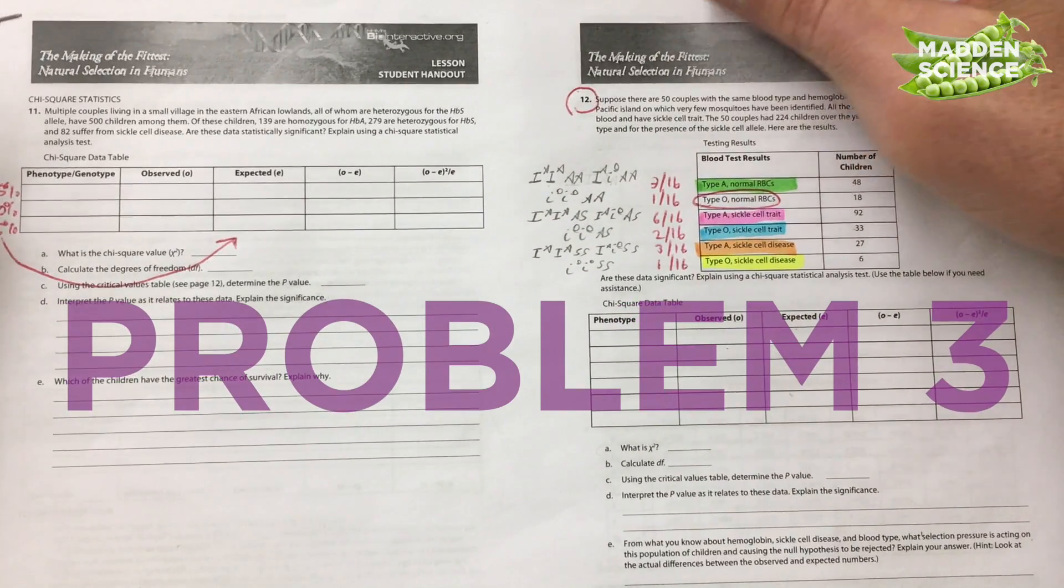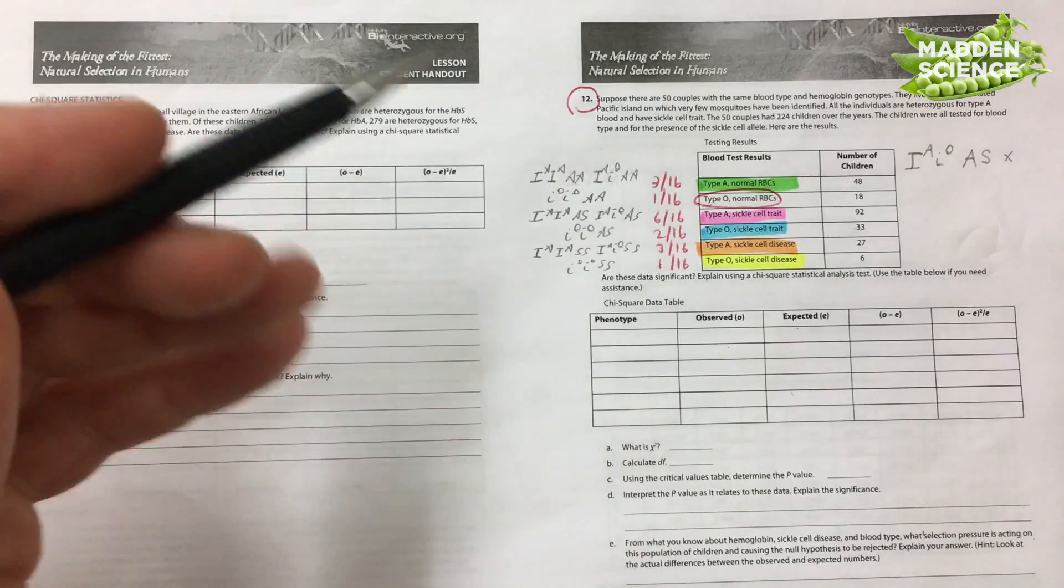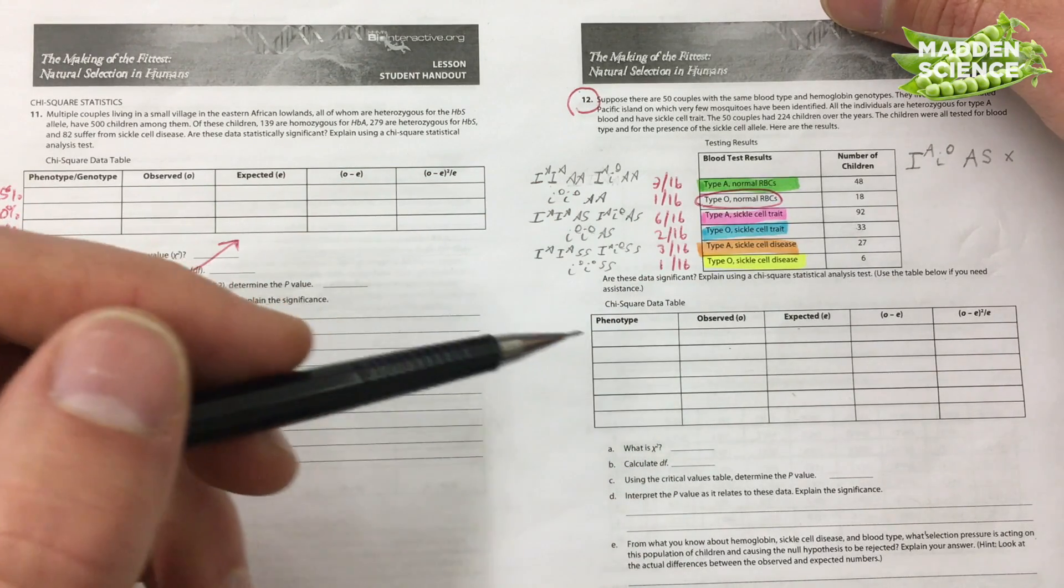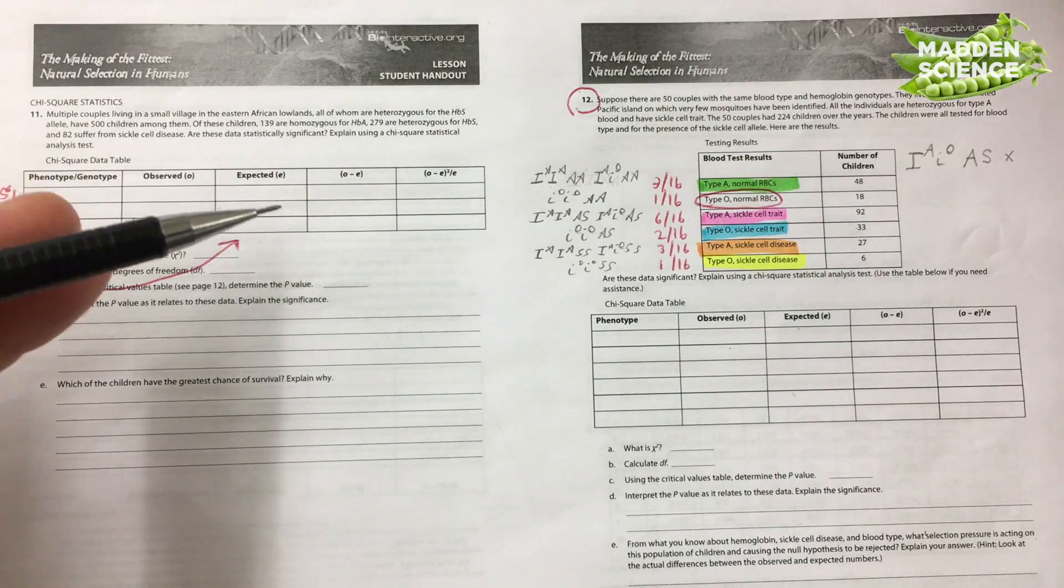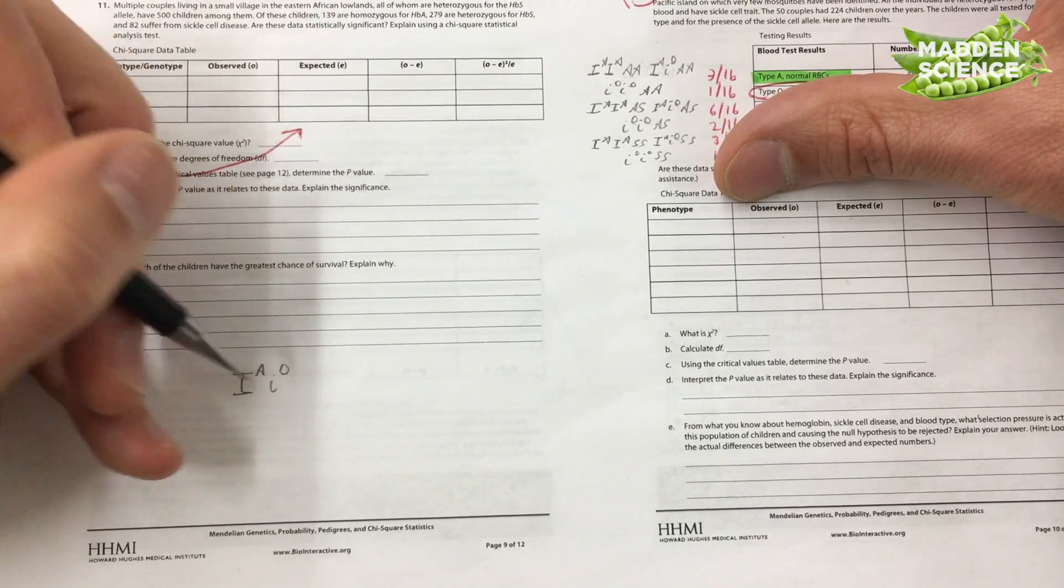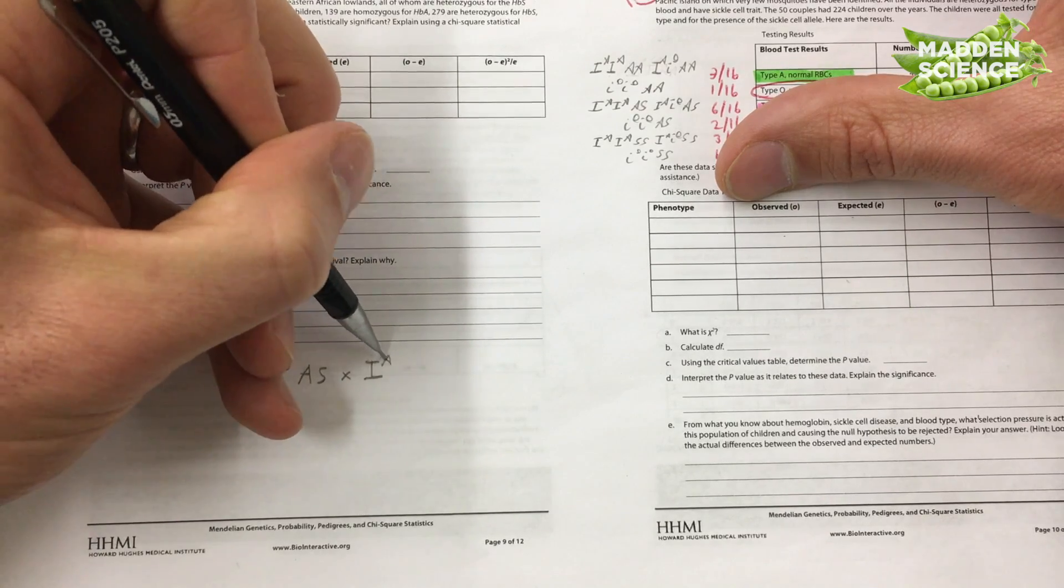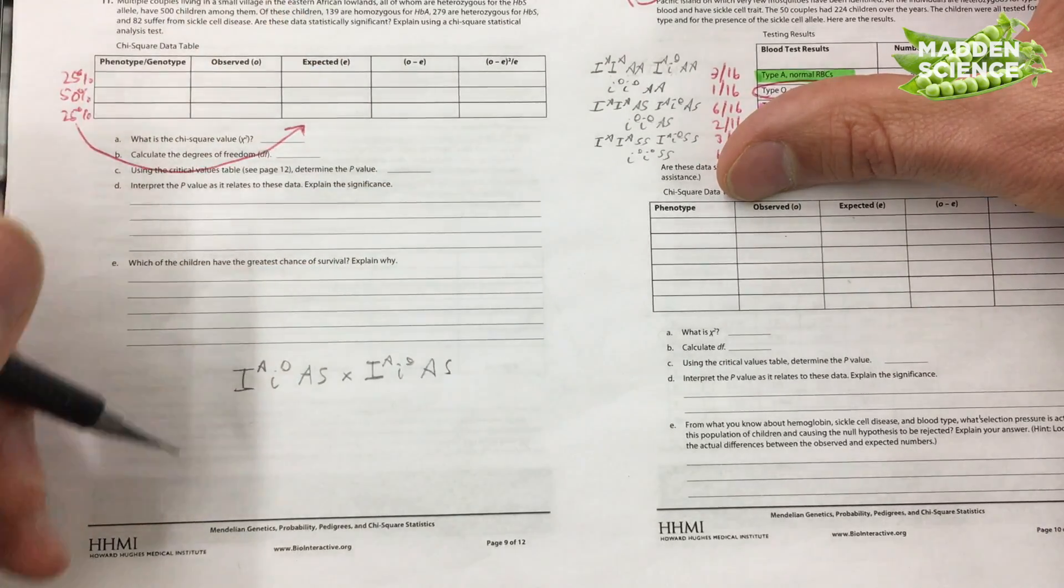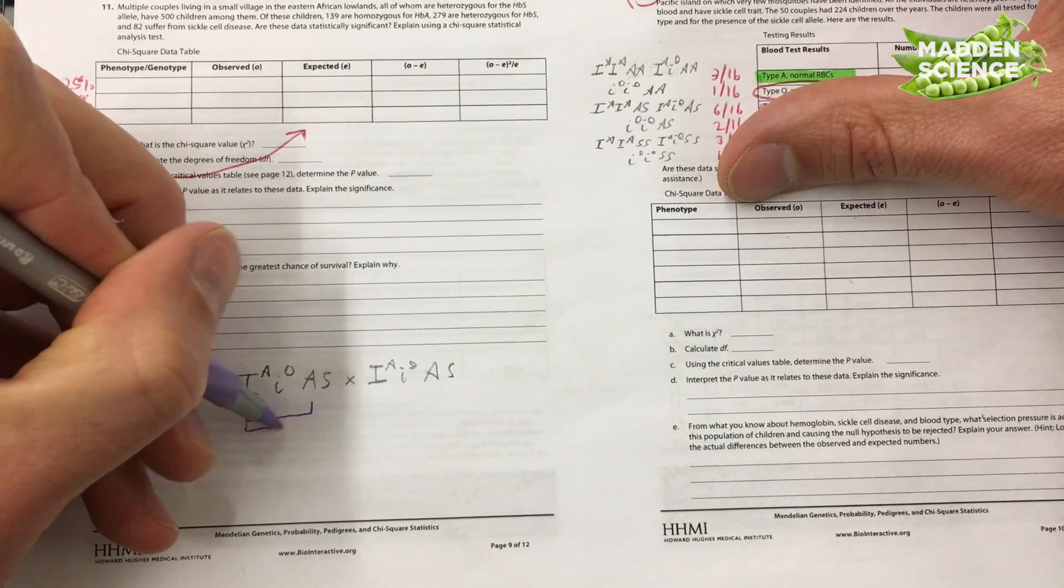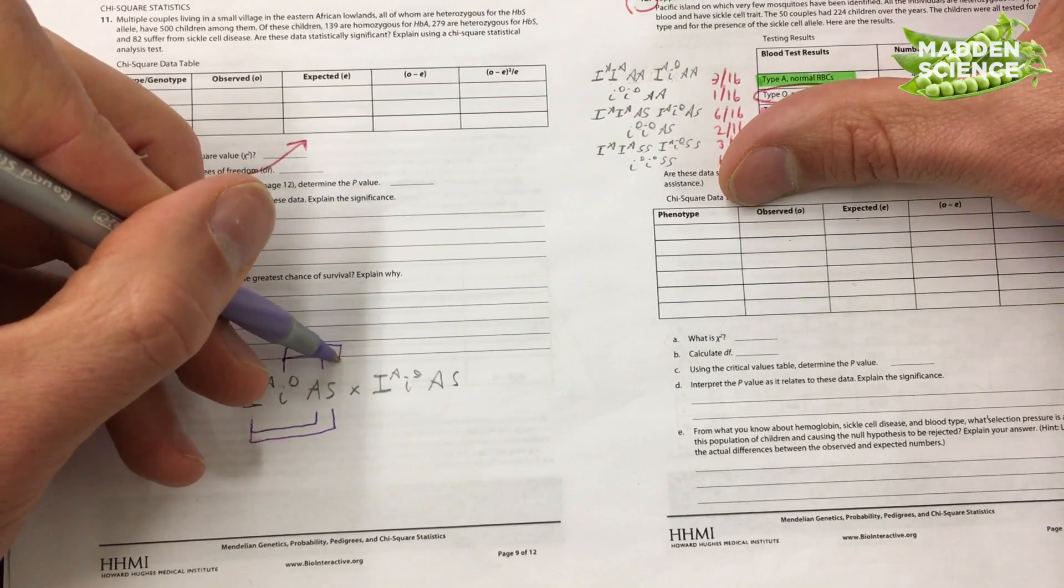All right, now our HHMI natural selection sickle cell part. We're focusing in over here on problem 12, which is on page 10. Looking at a bunch of couples, we got two different traits involved. For blood type, either A or O, and then what's going on with the red blood cells. We're told that we have couples that are all heterozygous for type A blood. The way in which we're writing that then is big I, A, little i, O, and big A, S. These individuals are crossed with the same heterozygote. Now note when we're going to do our gamete selection, we can get big I, A with a capital A, big I, A with an S, little i, O with a capital A, little i, O with an S.